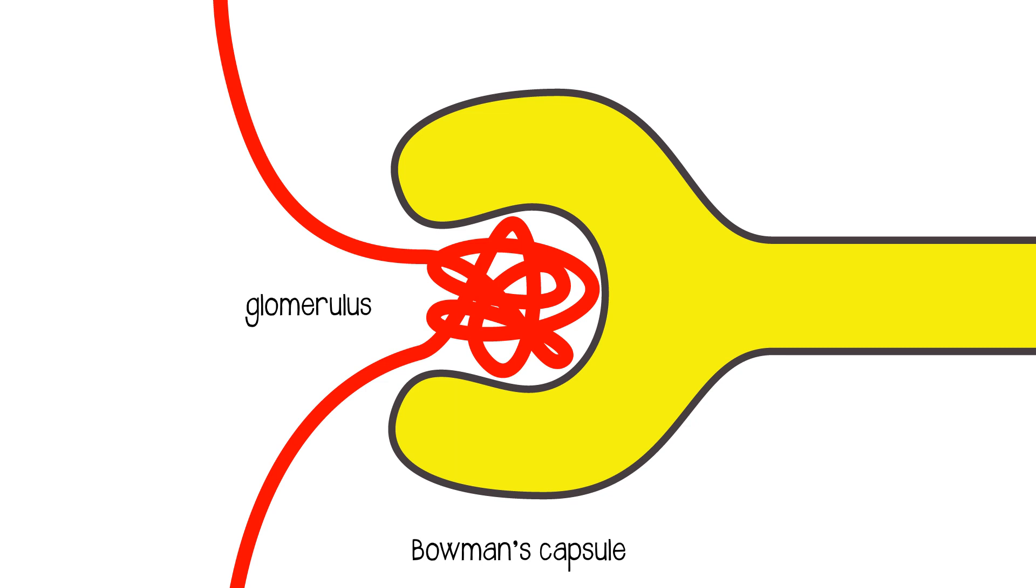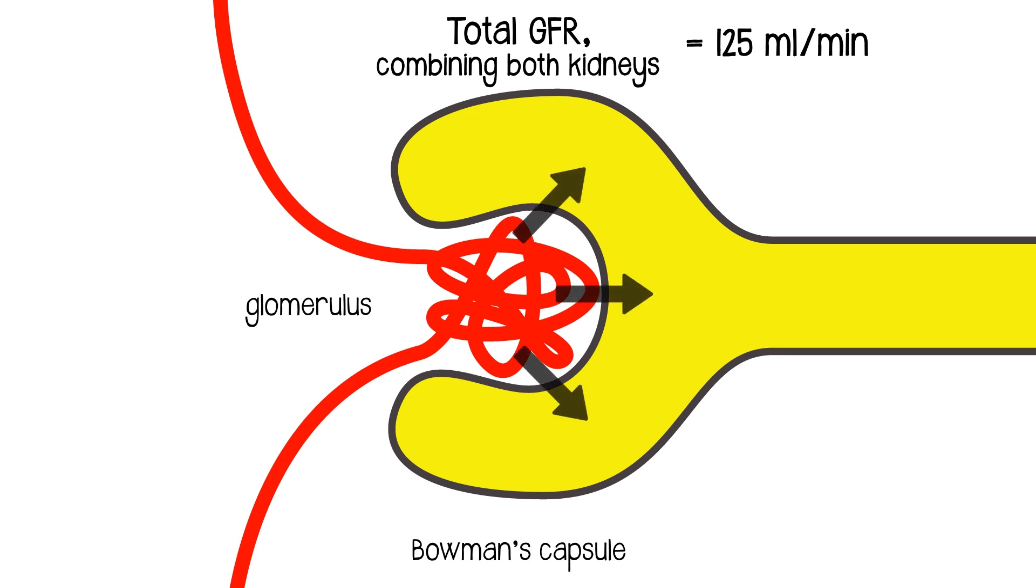So a proportion of the plasma is going to be filtered into the Bowman's capsule, and then it's going to continue the journey along the nephron. The glomerular filtration rate, as it's referred to, is 125 millilitres per minute. That, at least, is the textbook value. So 125 millilitres of plasma is going to be filtered off every minute, and then the kidney processes that fluid.